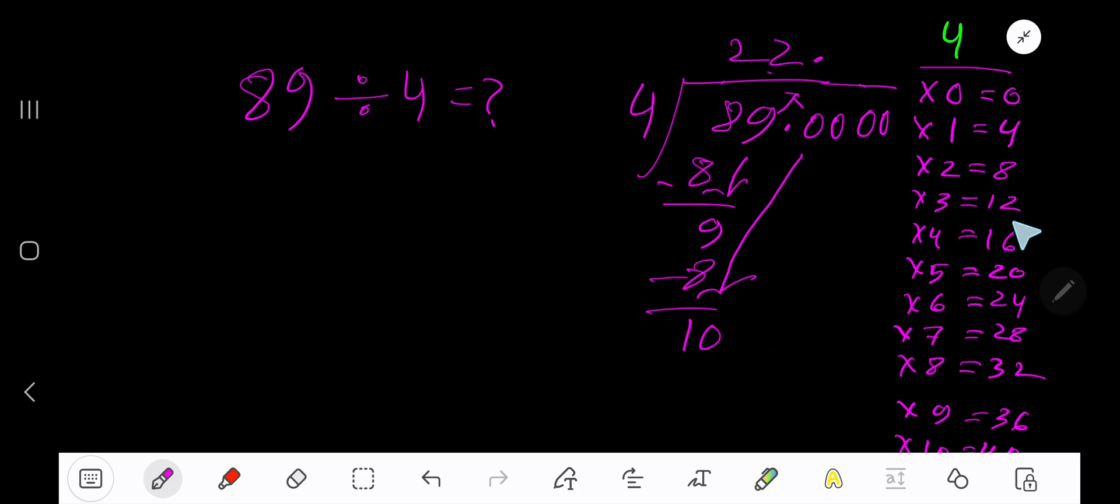4 goes into 10. How many times? 3 times is 12, which is greater than 10. So 2 times. Write 2. 2 times 4, 8. Subtract 2.